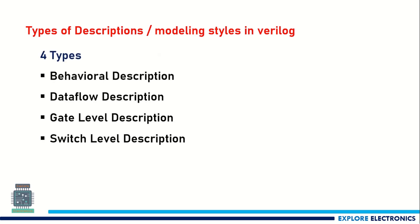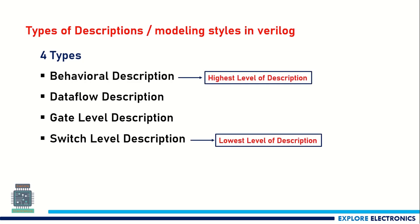There are four types of modeling styles in Verilog, also called levels of description. The first is behavioral description or behavioral modeling. The second is data flow description. The third is gate level description. The fourth is switch level description. Behavioral description is the highest level, and switch level is the lowest. In behavioral description, we write code using C-like constructs such as if-else statements and loops.